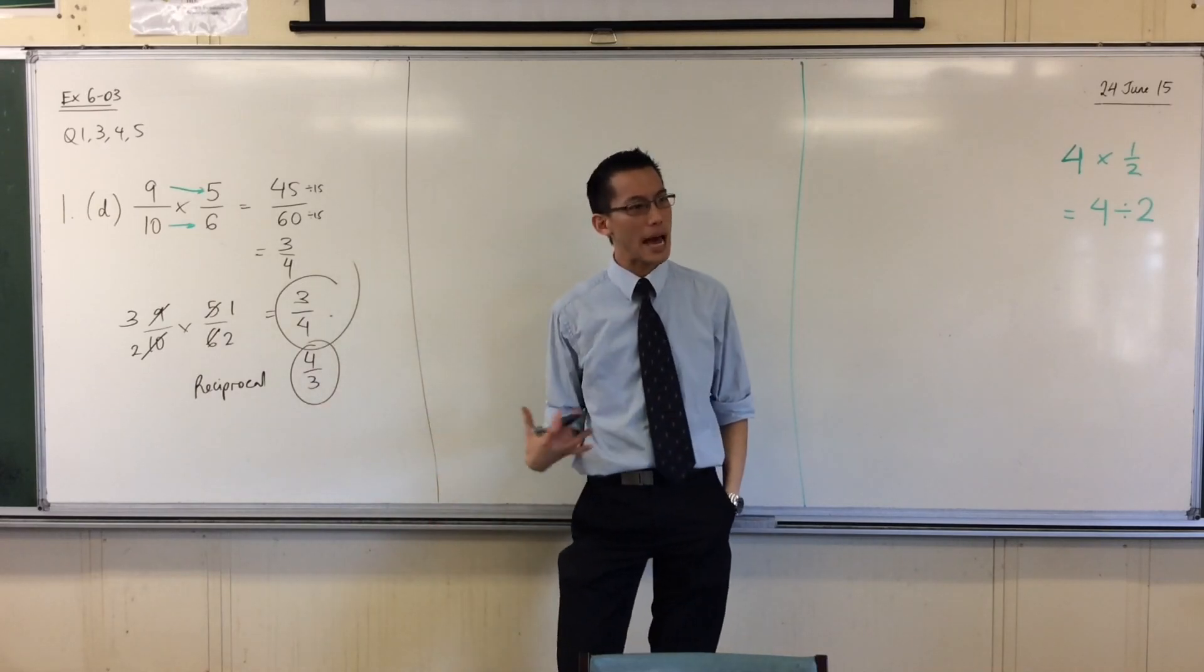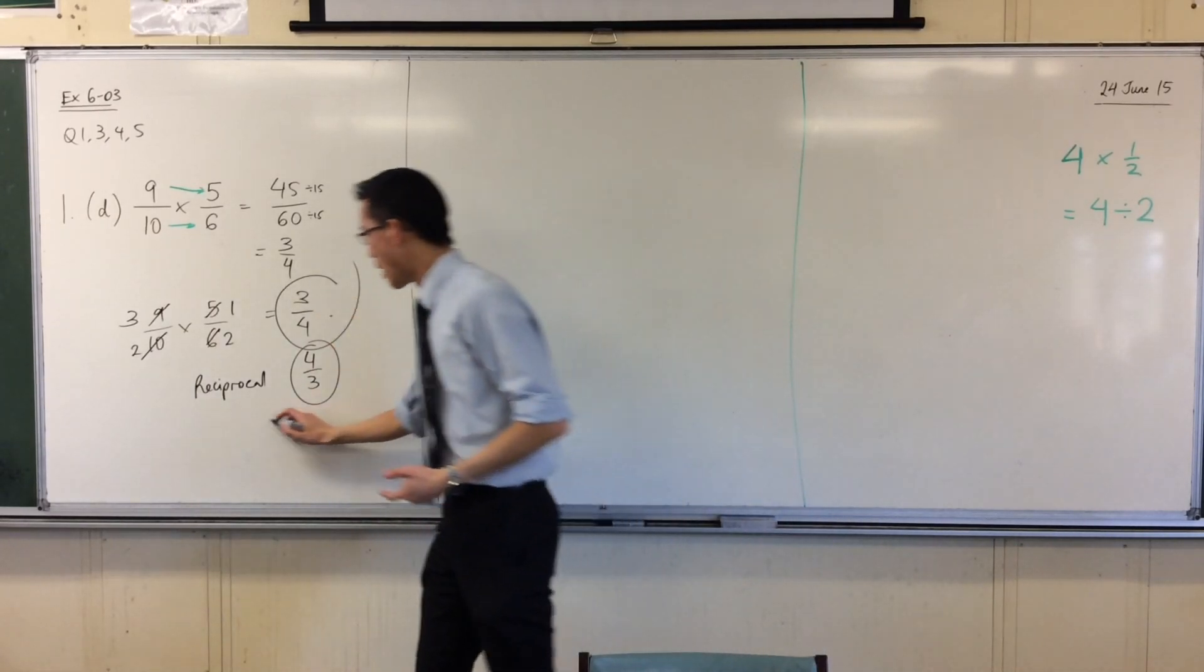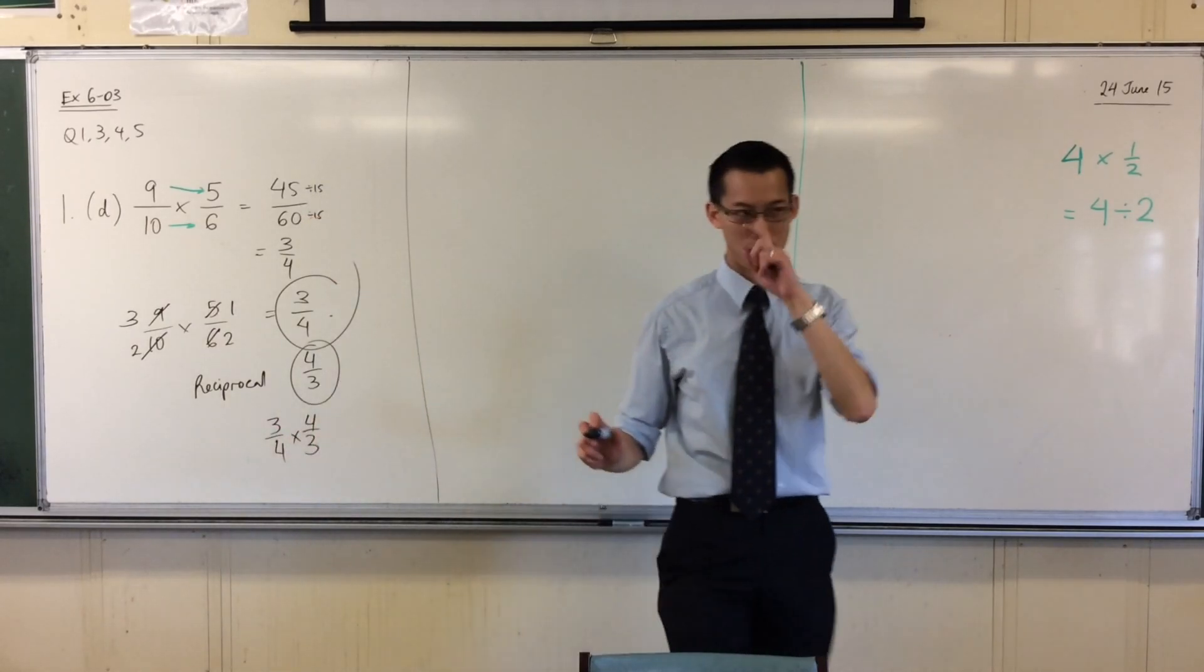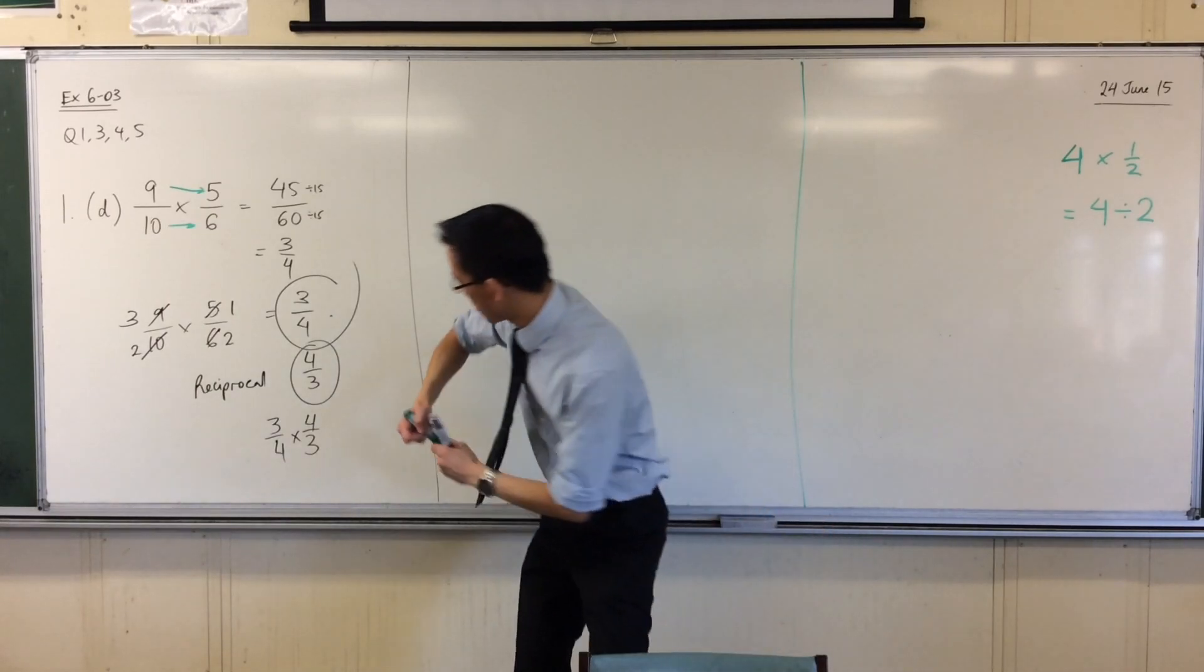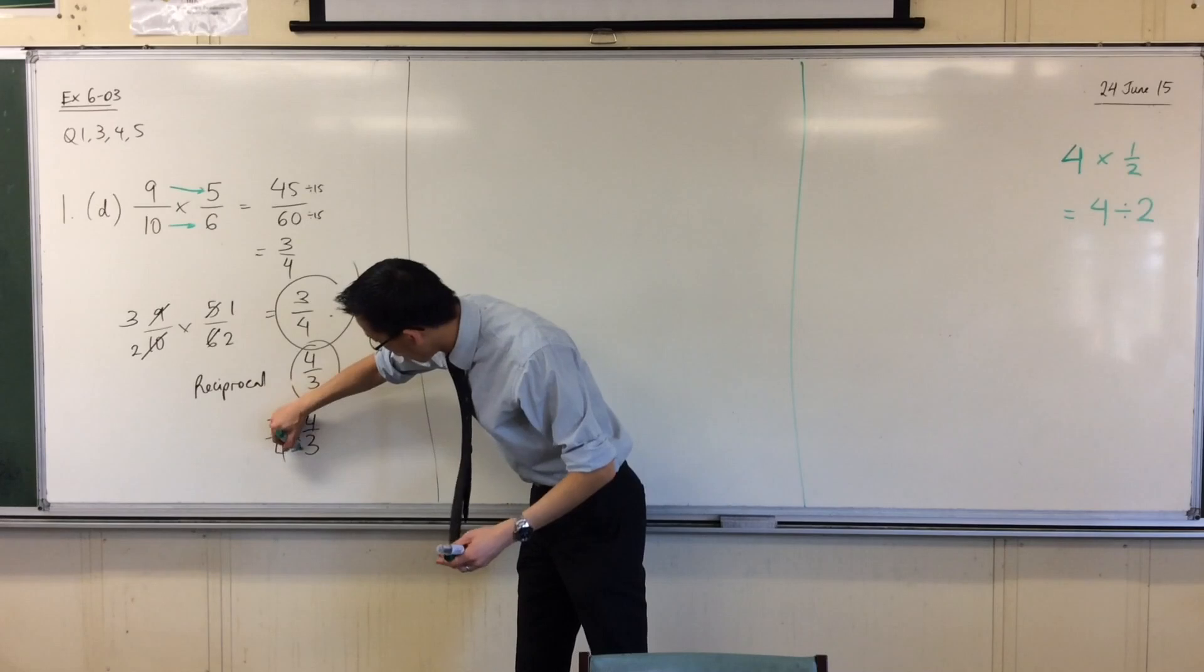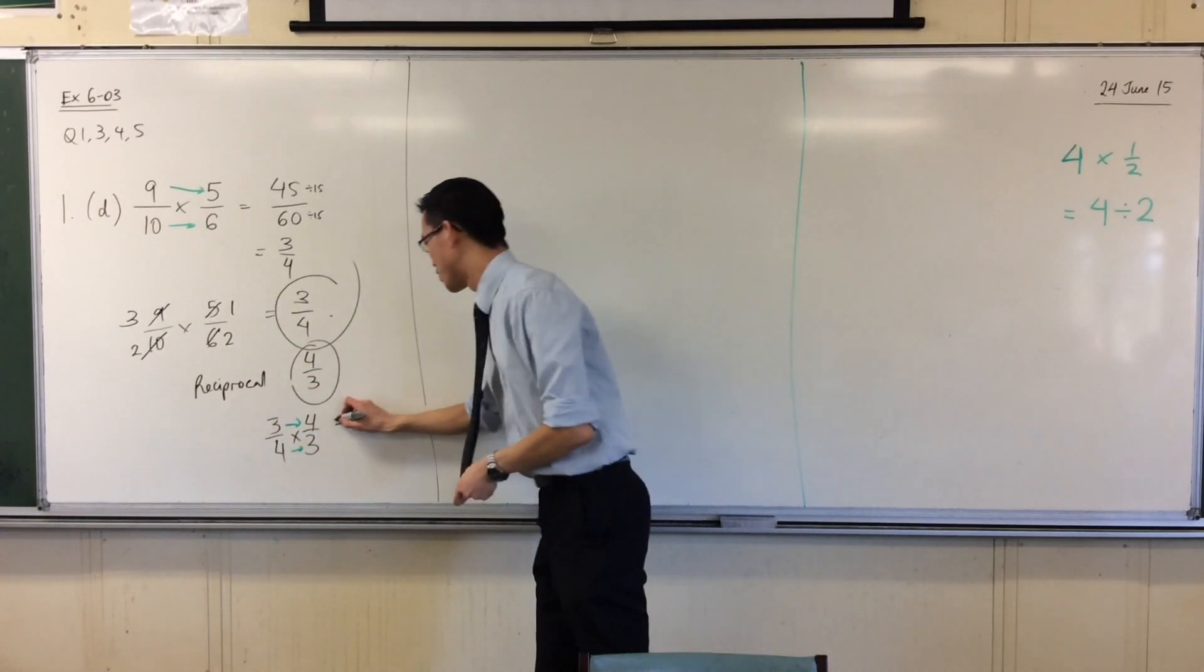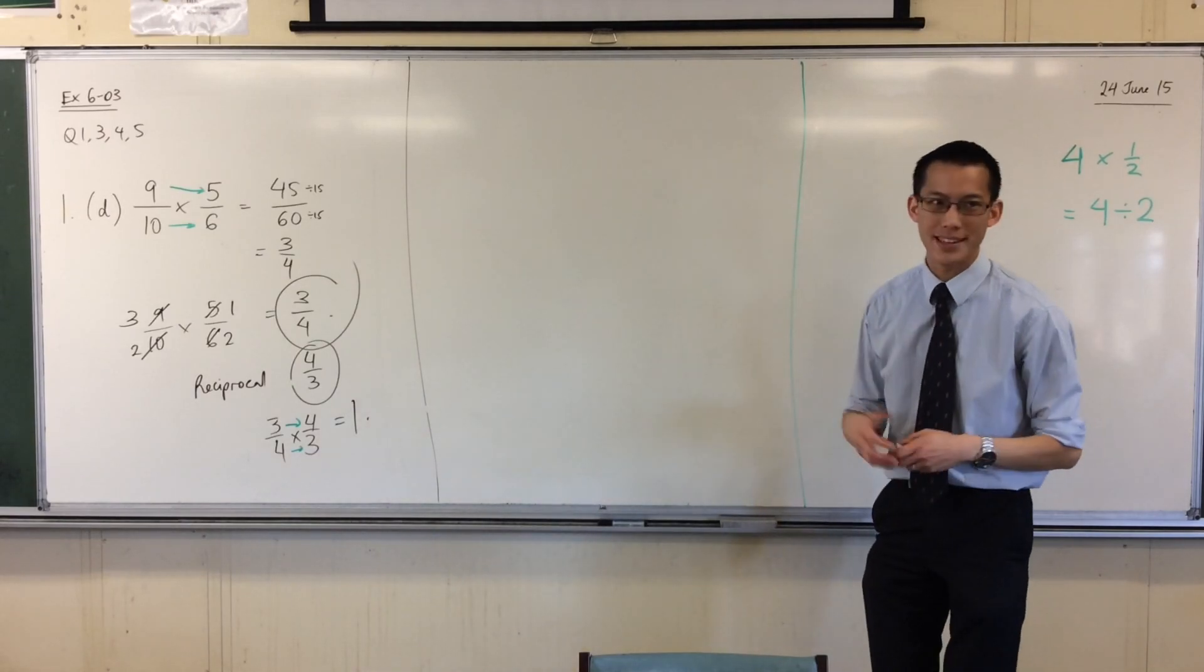One of the questions is, what happens when you multiply a number by its reciprocal? And no matter what number you start with, except for 0, what happens? When you do the numerators, you're going to get, in this case, 12, and this will also become 12, so it'll be 12 over 12, which is 1 over 1, which is always 1. Whenever you multiply a number by its reciprocal, you'll always get 1.